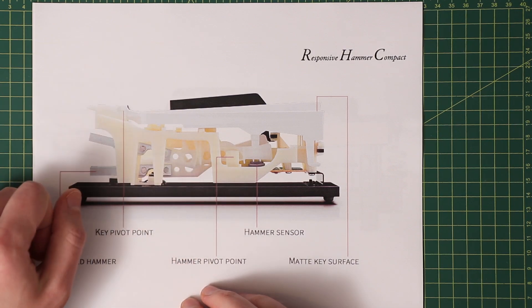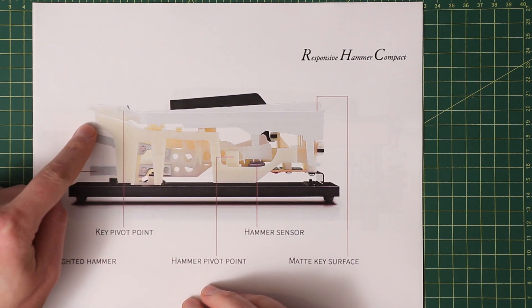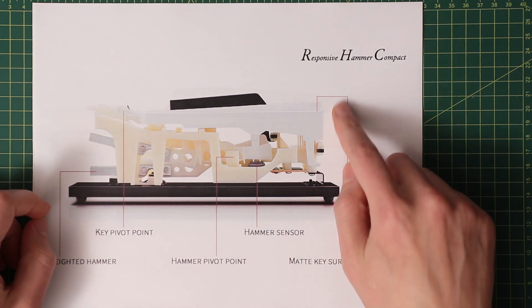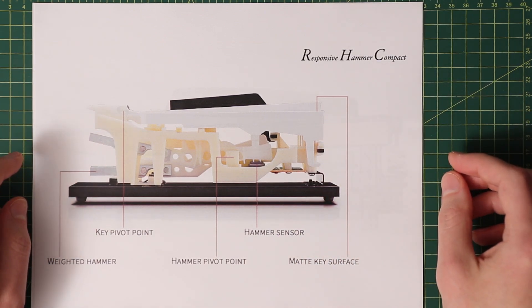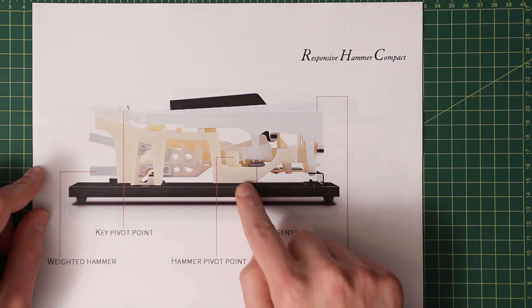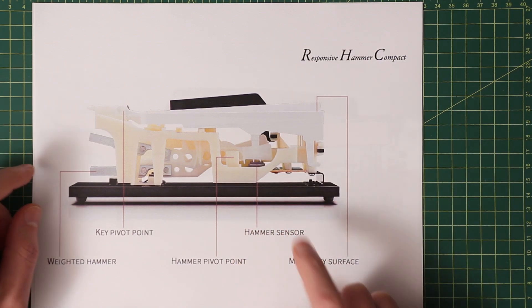there is no longer a spring keeping the key up and instead the key is counterbalanced by this weighted lever such that when you press the key, the lever with the weight moves up and when you release the key, the weight causes the lever to move and raise the key back up. Key hits are registered much the same way as with synthesizers with a couple of sensors per key that get triggered consecutively.